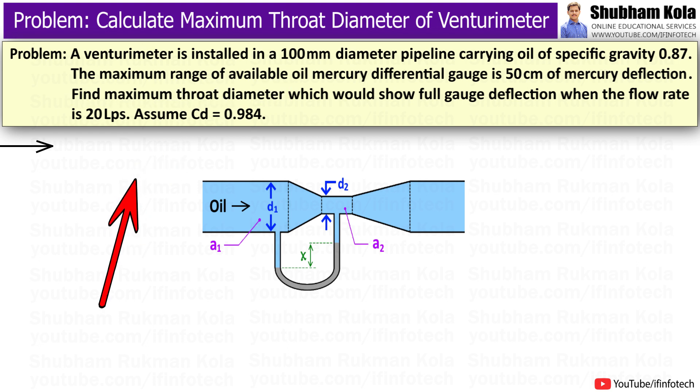The problem statement is given as: a venturimeter is installed in a 100mm diameter pipeline carrying oil of specific gravity 0.87.